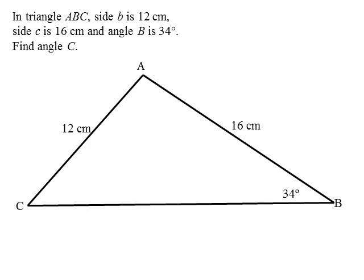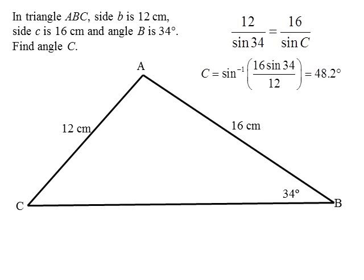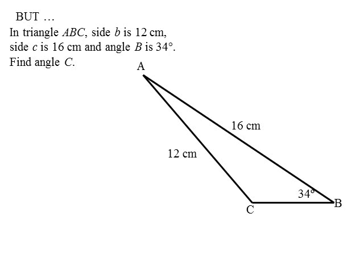Here's another example. You have this triangle here. You want to work out angle C. Use the sine rule, rearrange for C, it says 42.8. But if you didn't have the diagram, you could also draw it like this.